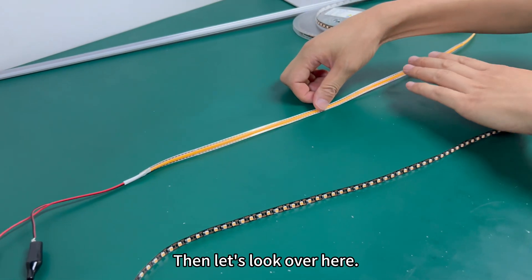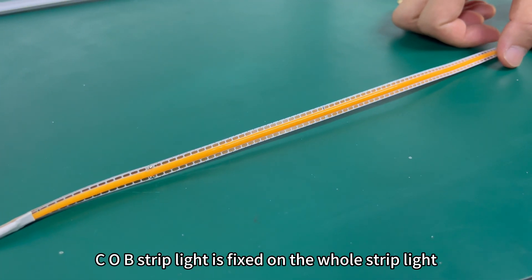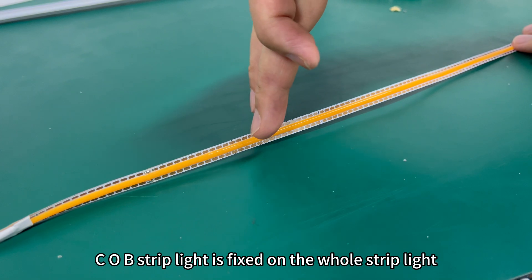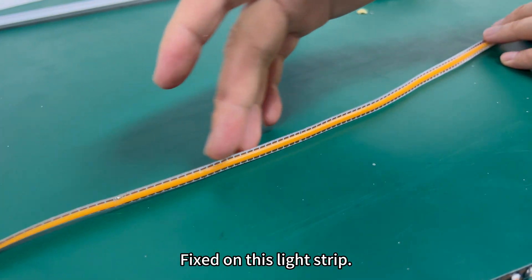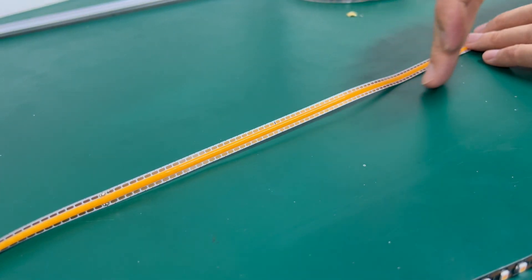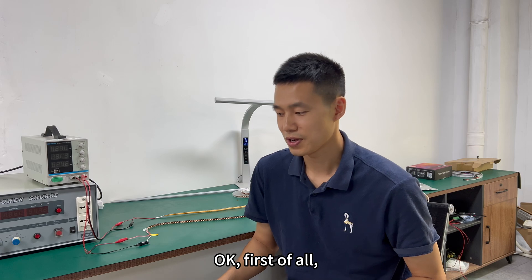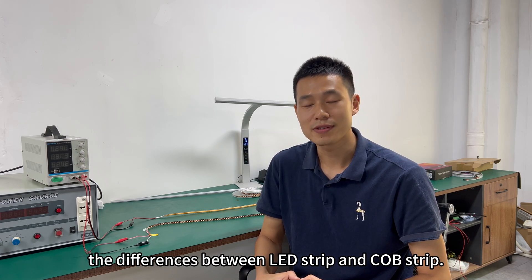Then let's look over here. And this is the COB strip. COB strip light is fixed on the whole strip. Put the LED chip fixed on this light strip, then it is sealed in this light strip through glue. Okay. First of all, what we need to know is the differences between LED strip and COB strip.